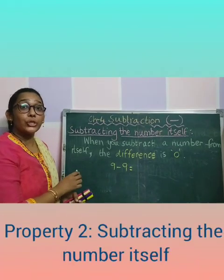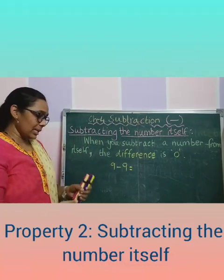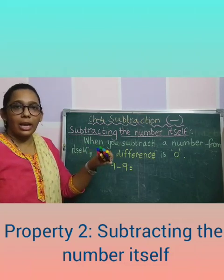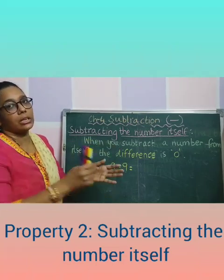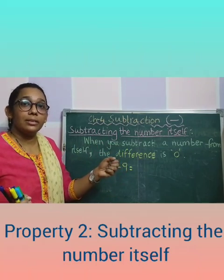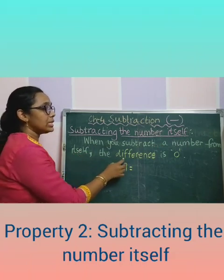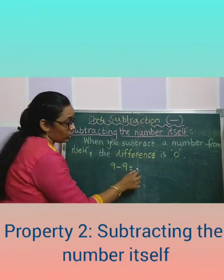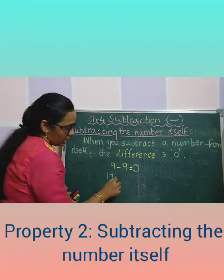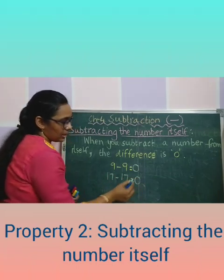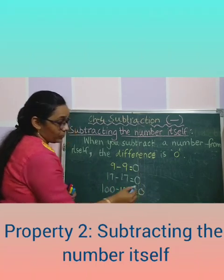This is property 2 — second property: subtracting the number itself. The same color pens — we have 9 and I want to take away 9. We have 9, I am taking away 9. How many remaining? 0, right? When you subtract a number from itself, the difference is 0. 9 minus 9 gives you 0. 17 minus 17 gives you 0. 100 minus 100 gives you 0. Understood, children?